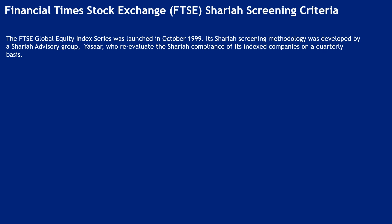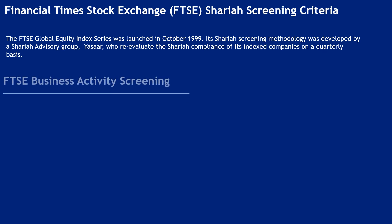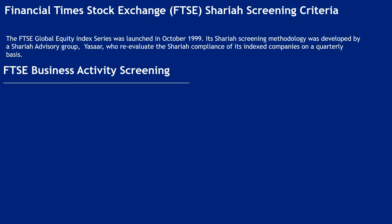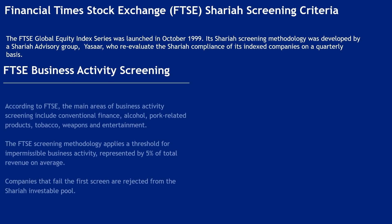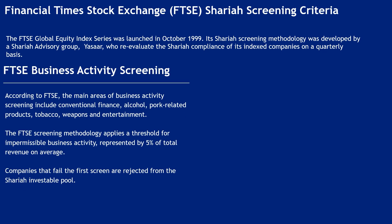Financial Times Stock Exchange (FTSE) Shariah Screening Criteria. The FTSE Global Equity Index Series was launched in October 1999. Its Shariah screening methodology was developed by a Shariah advisory group, YESAR, who re-evaluate Shariah compliance of indexed companies on a quarterly basis. According to FTSE, the main areas of business activity screening include conventional finance, alcohol, pork-related products, tobacco, weapons, and entertainment.